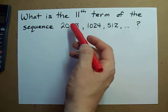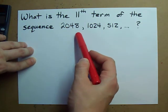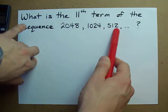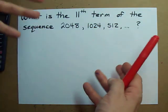In this case, we go down by 1024, and then down by 512. That's not the same. It's clearly not arithmetic.